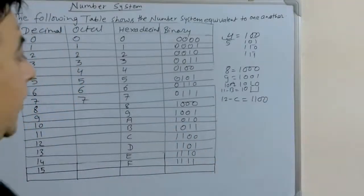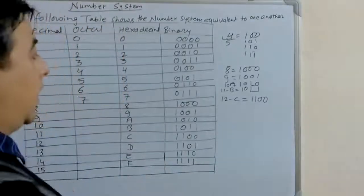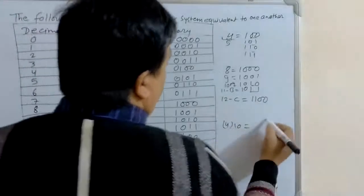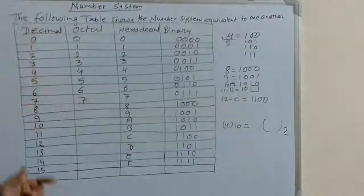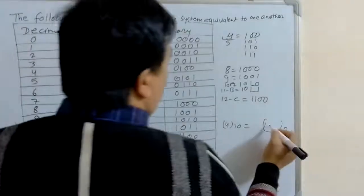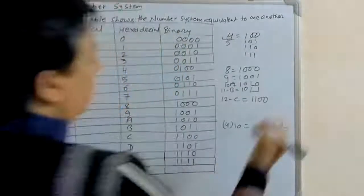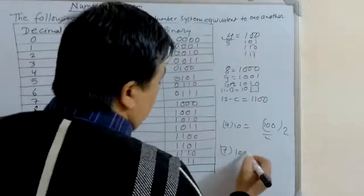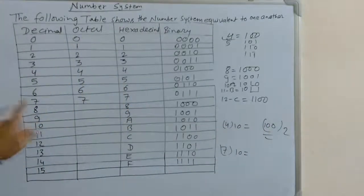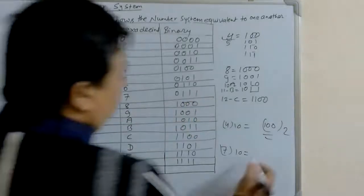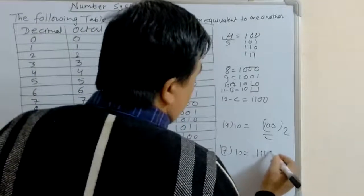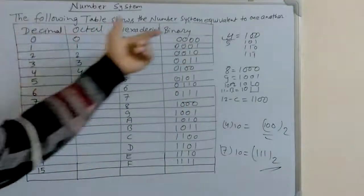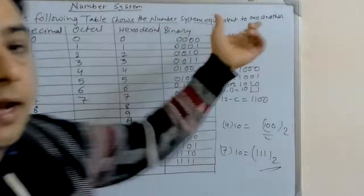So, if anyone asks what is the binary number of decimal 4, the answer is 100. And for decimal 7, 7 in binary means 111, so the binary is 0111. The following table shows the number systems equivalent to each other.